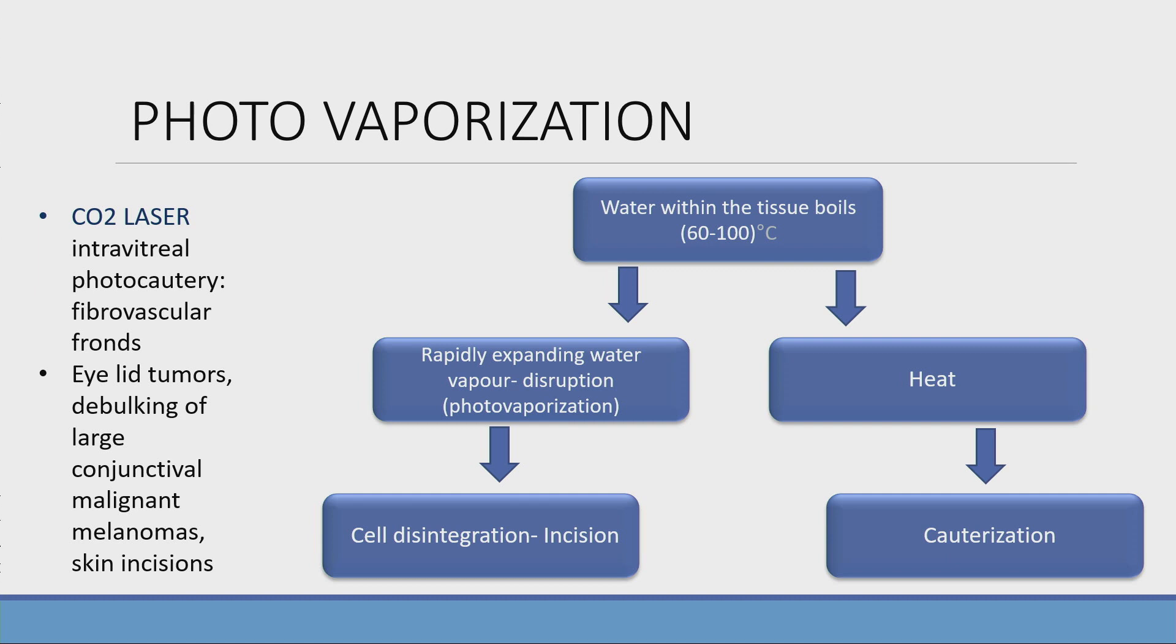Now if the temperature in the tissue reaches 60 to 100 degrees, it causes photovaporization. Here what happens, the water vapor expands causing disruption. This principle is used in cell disintegration,